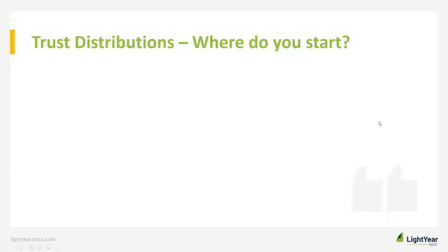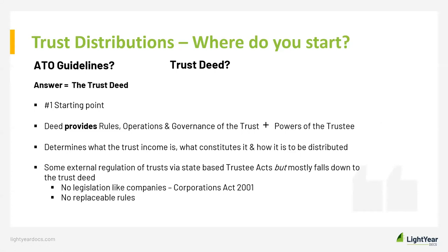Trust distributions — where should you start? Is it ATO guidelines? There's been a lot on this over the last several years, some cases around this — or is it the trust deed? The winner is the trust deed. This is the number one starting point. The deed provides the rules, the operations and governance of the trust and the powers of the trustees. There's no legislation for trusts like there is for companies such as the Corporations Act, and unlike companies, trusts do not have replaceable rules.